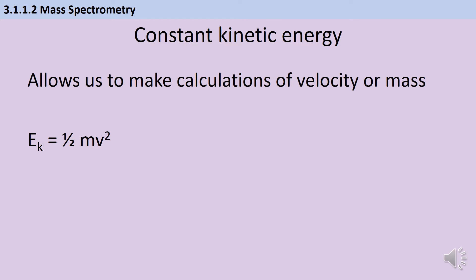The equation that you need for kinetic energy was one that you had to memorise for GCSE physics. You don't need to memorise it for A-level chemistry because it is given in the exam, but you are expected to know that the standard international units for mass will be kilograms and for velocity will be metres per second, and you're also expected to remember that velocity can be found by dividing distance by time.